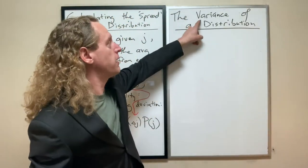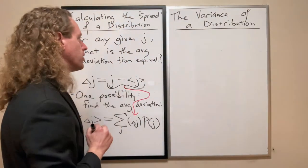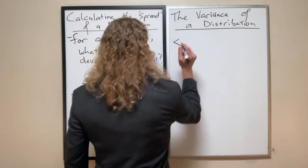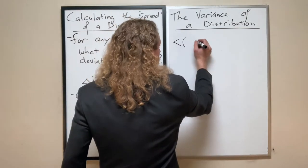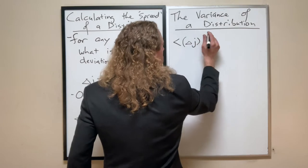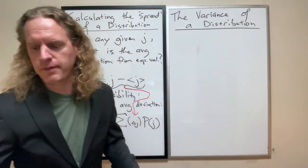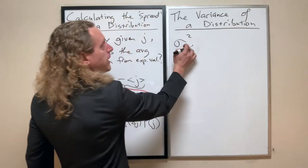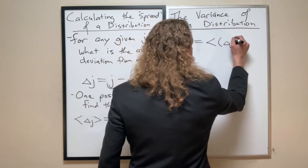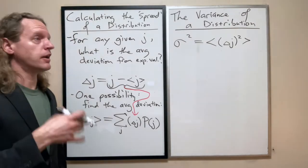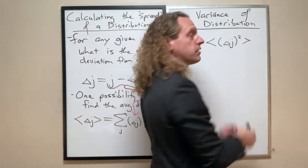So rather than ask what is the spread, we're going to ask now what is the variance. This is a very well-defined and useful function for us. We're going to define this properly as follows: instead of calculating the average of that deviation, we're going to calculate the average of that squared.